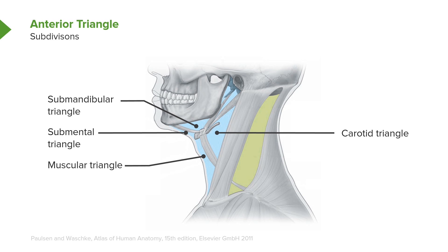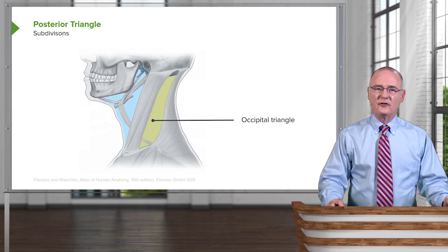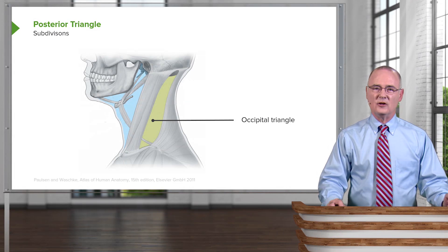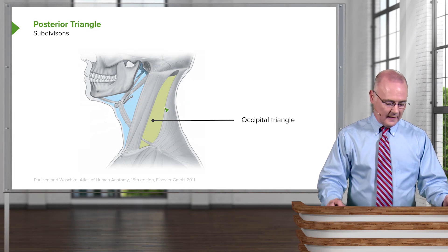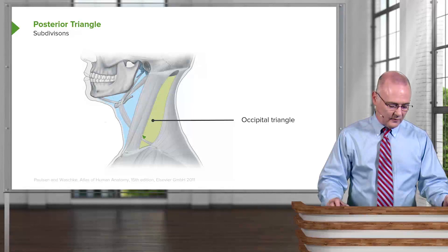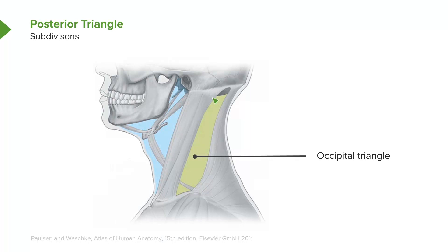The fourth and final subdivision of the anterior triangle is referred to as the muscular triangle. Its boundaries are the anterior belly of the omohyoid, the inferior portion of the sternocleidomastoid, and the midline of the neck, with the upper limit being the hyoid bone. The posterior triangle is less complex with respect to its subdivisions. Here we see the occipital triangle, whose boundaries are the sternocleidomastoid, the posterior belly of the omohyoid, and the trapezius.